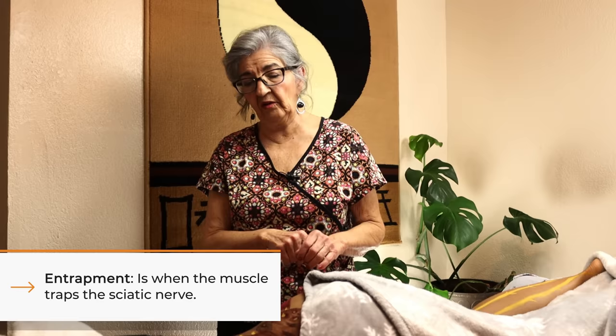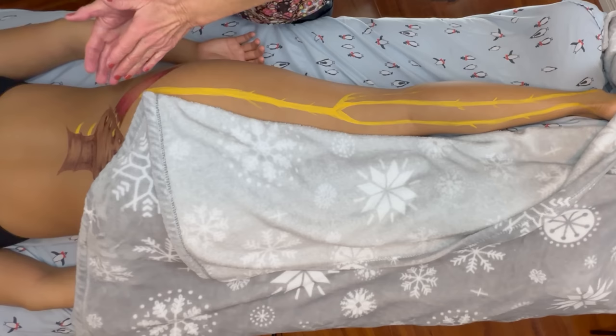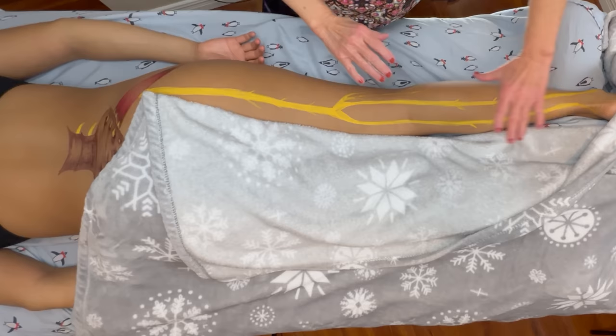I want to talk about the difference between entrapment and compression. Entrapment is when the muscle traps the sciatic nerve — that's soft tissue, something we can help the client with. It's usually the piriformis or the hamstrings. That's why when you're working on somebody with sciatic nerve pain you can't just work the glutes and the deep hip rotators — you've got to work the hamstrings because it affects the hamstrings and the lower part of the leg.